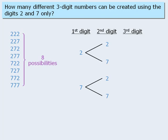Now, if the first digit is a 2, and the second digit is a 2, then the third digit can be either a 2 or a 7. And so it goes until we have the following tree.